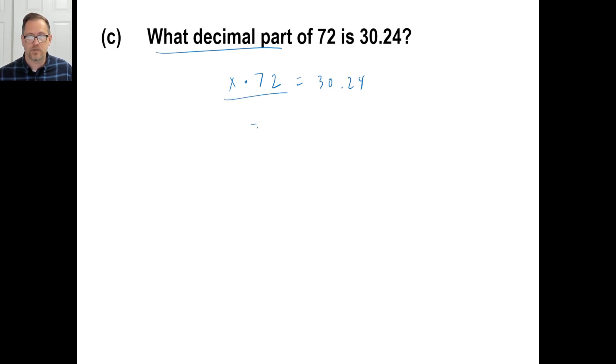Now I don't like the way that is, so I'm just going to go 72X equals 30.24. There you go. So all we need to do is just divide it by 72. Divide it by 72. And if you do the arithmetic and divide it by 72, you're going to find that the answer is 0.42. There you go. That's it. Once you have that method, use that method.